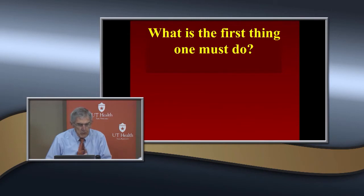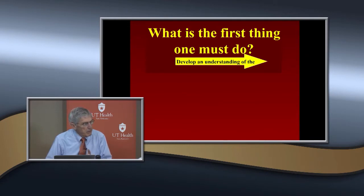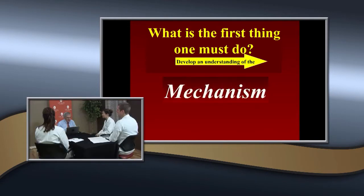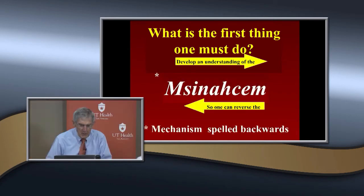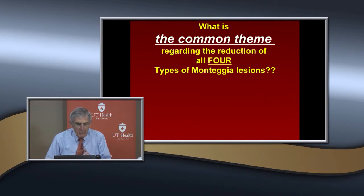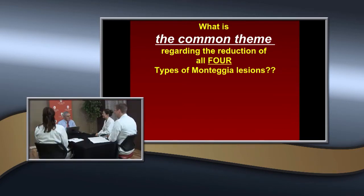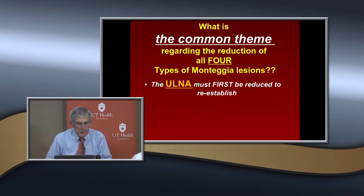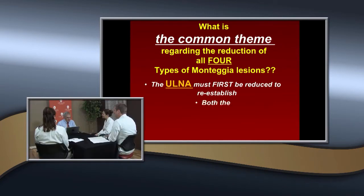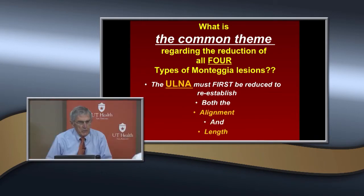To determine treatment, you must understand the mechanism, because you have to reverse the mechanism. The common theme for reduction of all four Monteggia types is: the key is the ulna. You've got to correct the ulnar deformity — restoring both alignment and length. If you don't do that, you cannot get the radial head in.